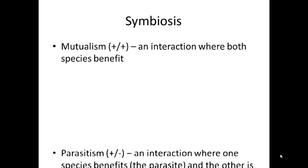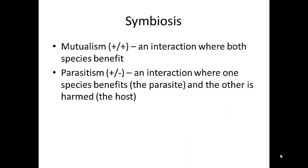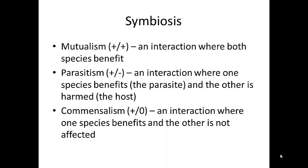The second type is parasitism. This is one you are probably more familiar with. This is an interaction where one species, called the parasite, benefits, while the other species, called the host, is harmed. The third type is commensalism. This is an interaction where one species benefits while the other is neither helped nor harmed.